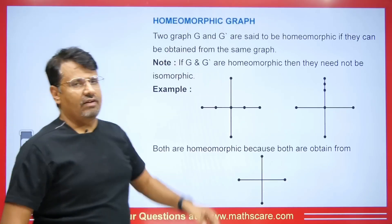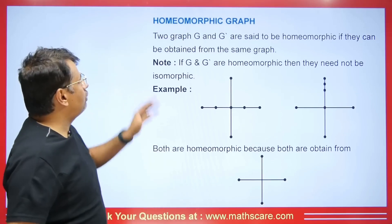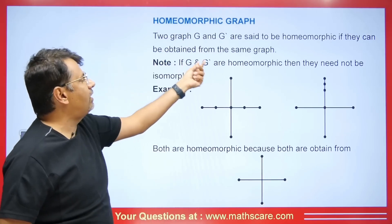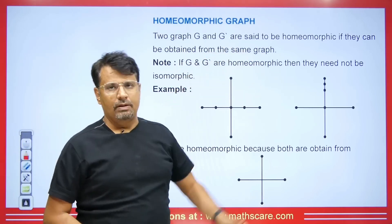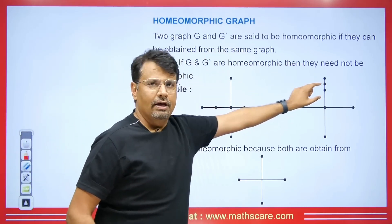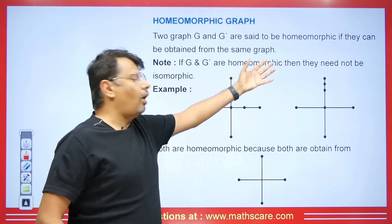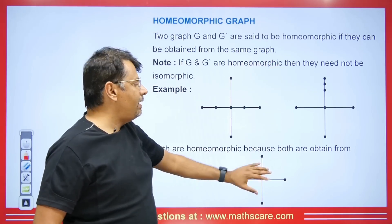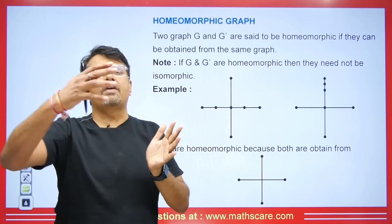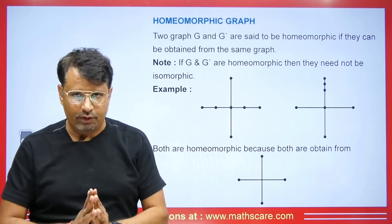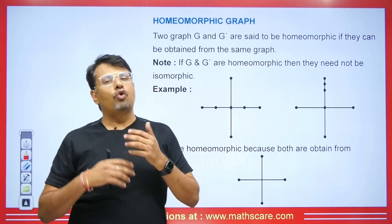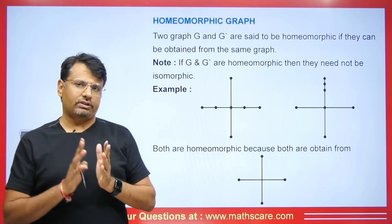Now let's see what a homomorphic graph is. Two graphs G and G' are said to be homomorphic if they can be obtained from the same graph. That is, if we have a base graph and we add some vertices on edges here or there, then all graphs obtained from this base graph are homomorphic to each other. These graphs that are homomorphic can or cannot be isomorphic.